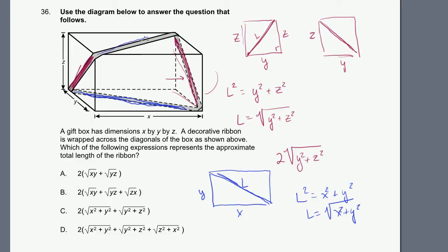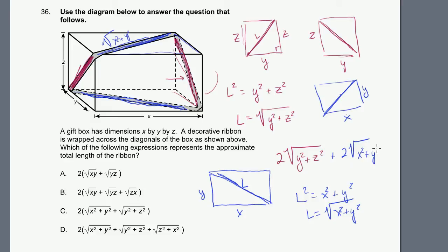This other length may not look the same because of the perspective, but it's the exact same thing. If this is x and the depth is y, looking at the box from the top, x squared plus y squared gives that length too. So this length is also the square root of x squared plus y squared. In total we have two of them, giving us plus 2 times the square root of x squared plus y squared.